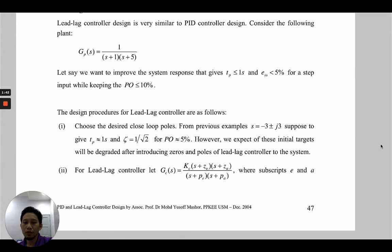For lead-lag controller, we have the controller GC equals KC times (s + ZE)(s + ZA) over (s + PE)(s + PA), where ZE is the zero for the lead controller and ZA is zero for the lag controller. Similarly, PE is the pole for the lead controller and PA is the pole for the lag controller.